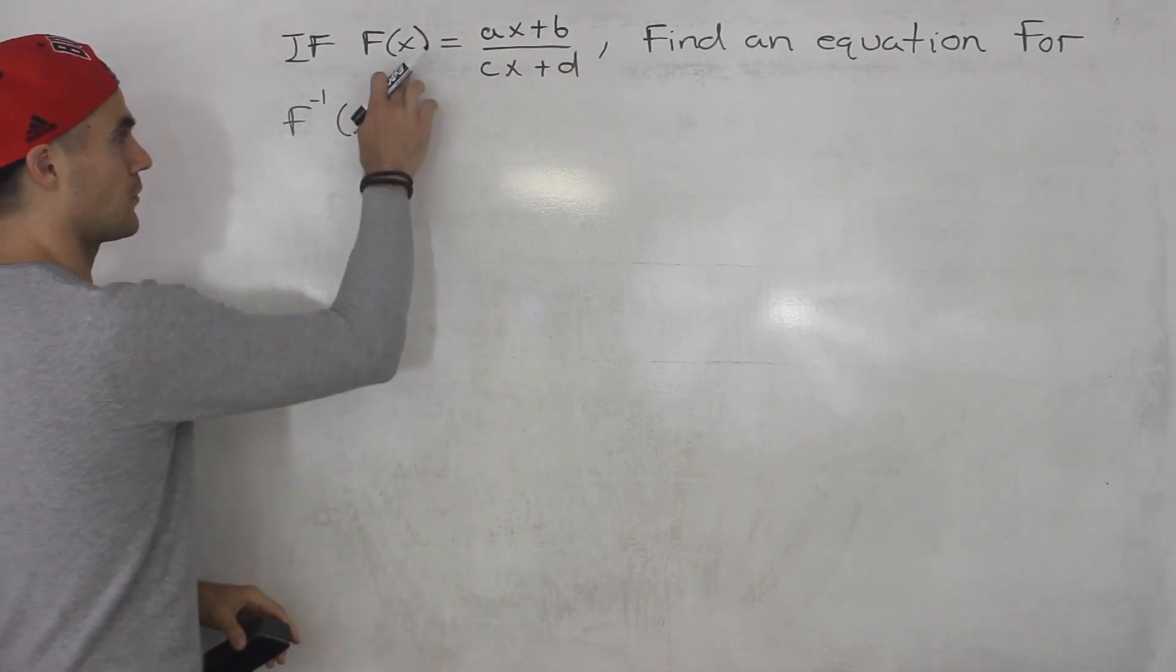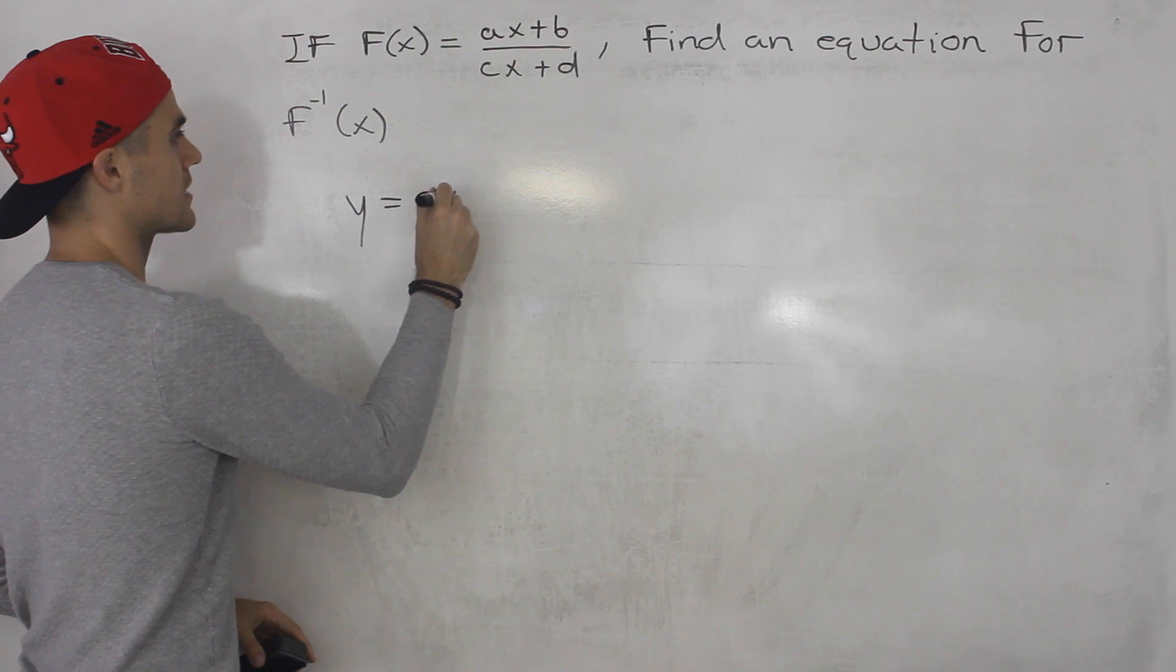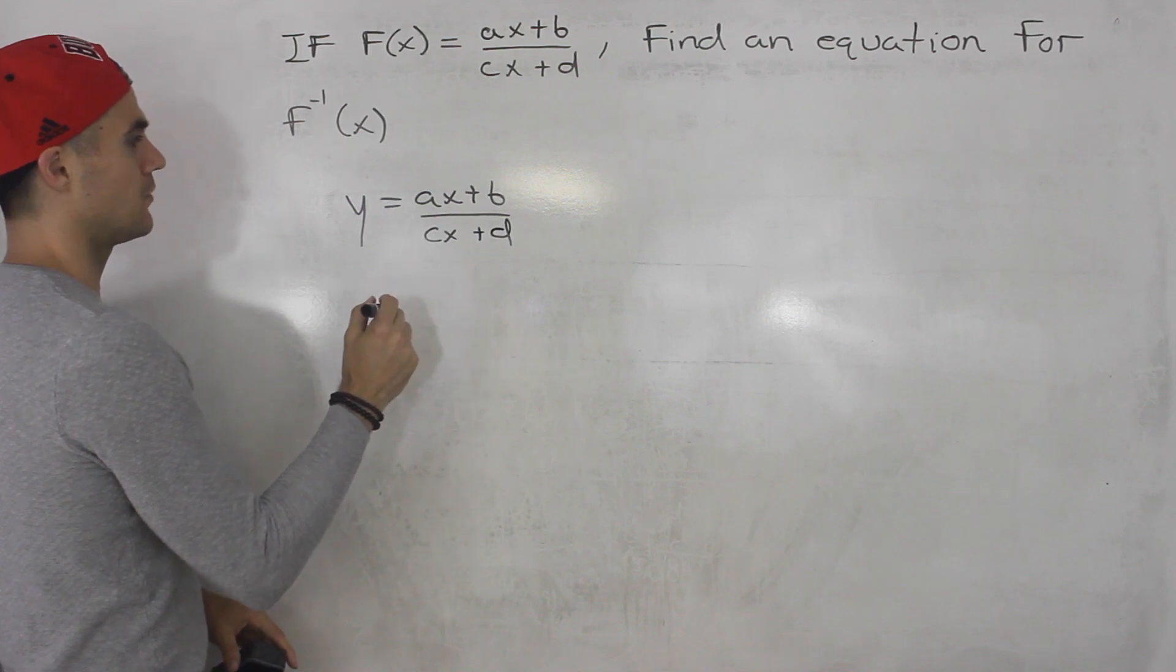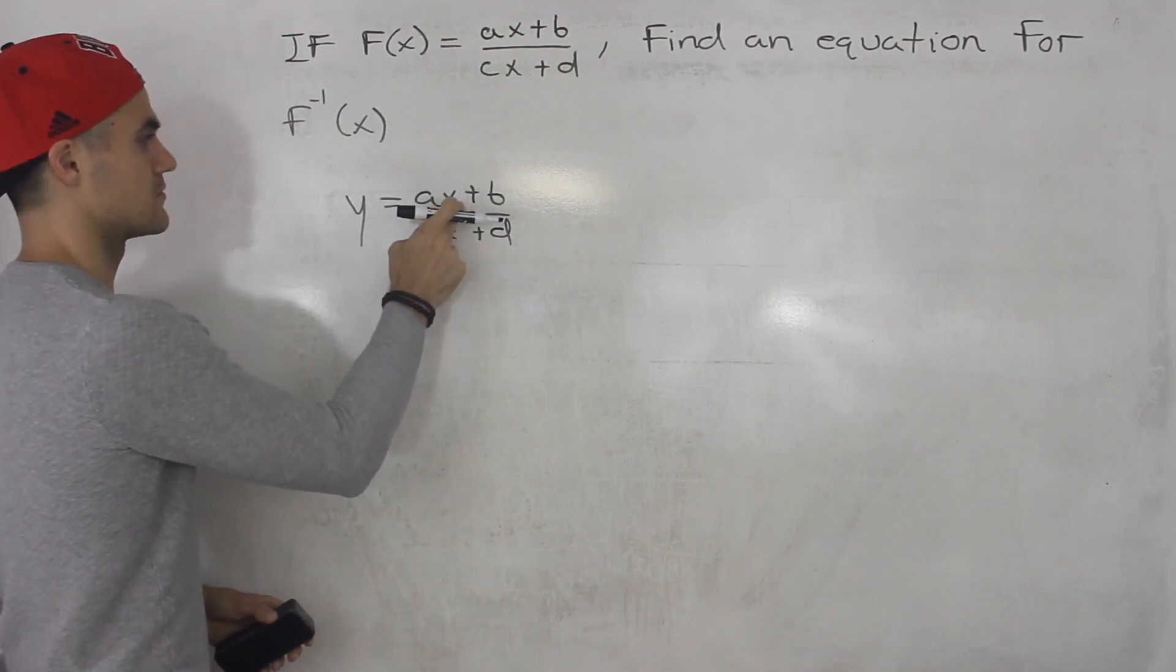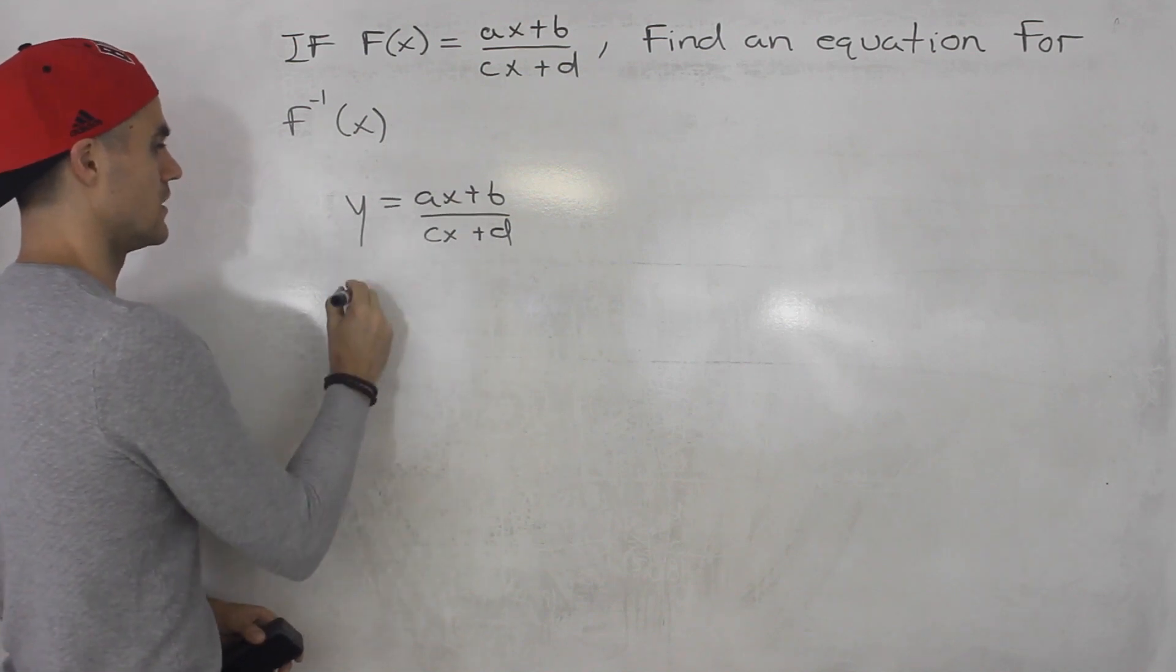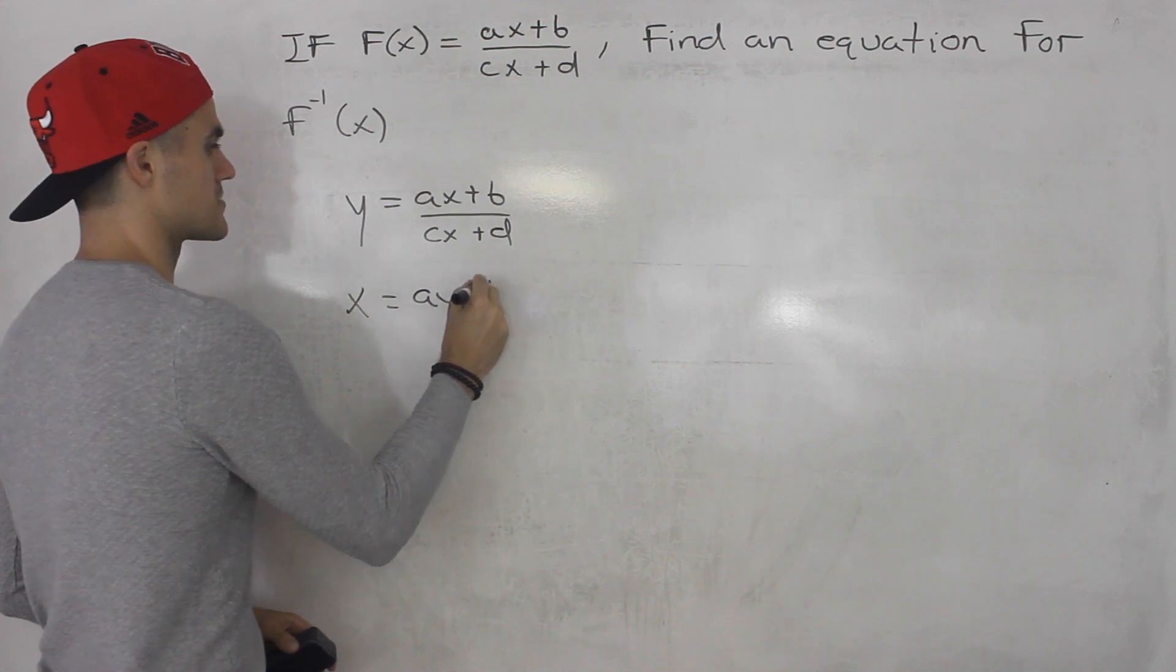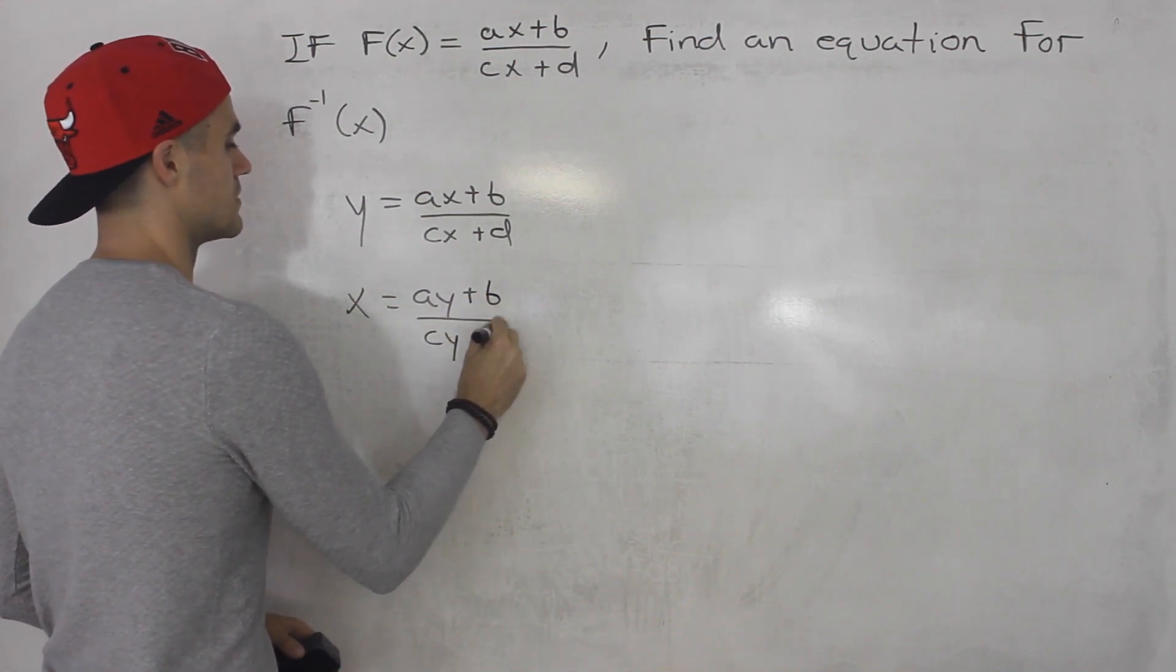So like usual what we want to do for f of x we want to plug in a y. So we got y equals ax plus b over cx plus d. Then what we want to do is switch the x and y's, but notice that there's two x's here. So for both of these x's we're going to plug in a y.